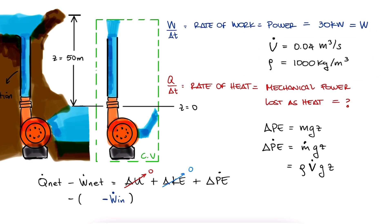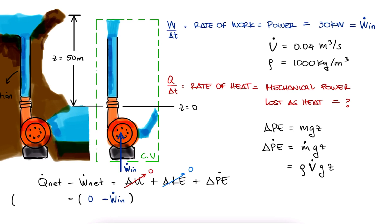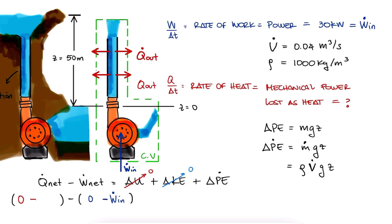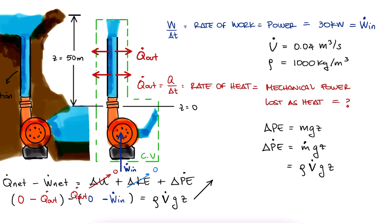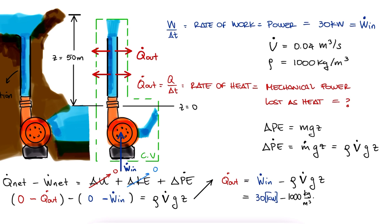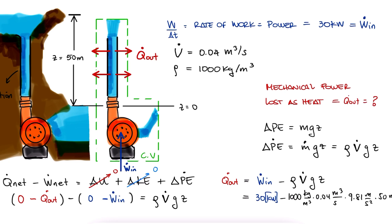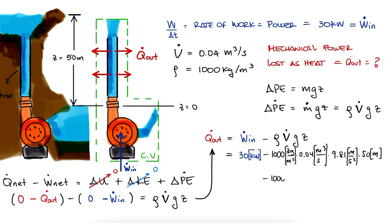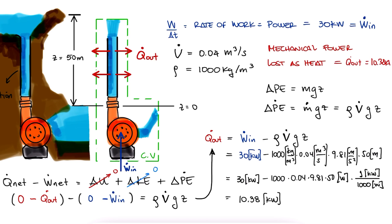We have a rate of work coming in, no work coming out, no heat rate coming in, and we're looking to find a heat rate coming out of the system due to friction. We solve for this heat rate and substitute the values for the rest of the variables. We make sure they are consistent by converting watts to kilowatts, and we find that the mechanical power lost to thermal energy due to friction is 10.38 kilowatts.